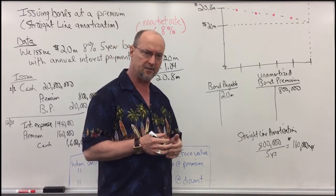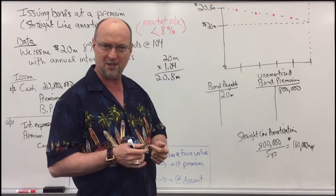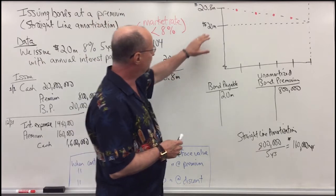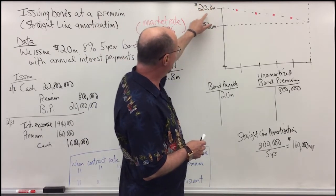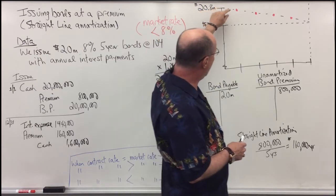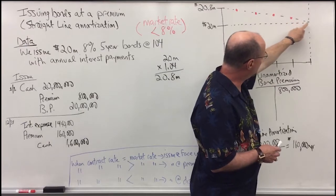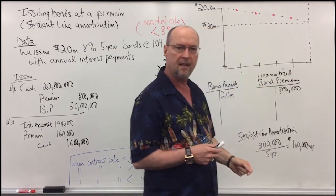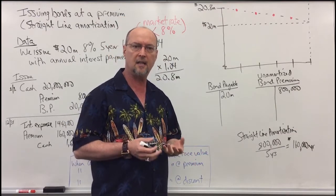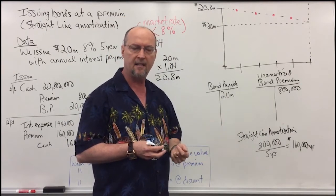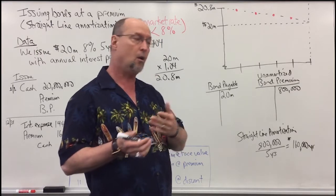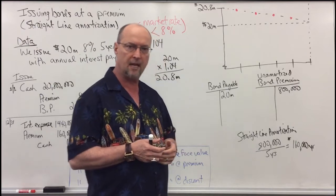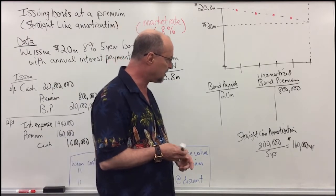Amortization is basically deferred interest. Let's look at this chart: here's the face value of the bonds, and here's the amount of money we raised on the date of issuance. Through the amortization process, the bond value is going to go down until the premium is fully amortized, because on the maturity date — five years from now — we're going to pay back $20 million. But investors gave us $20.8 million, so we have $800,000 more than we have to pay back. Rather than call that income all in year one or all in year five, we spread it out — we amortize it, similar to depreciation — over the five-year life of the bonds. Each year we amortize $160,000.